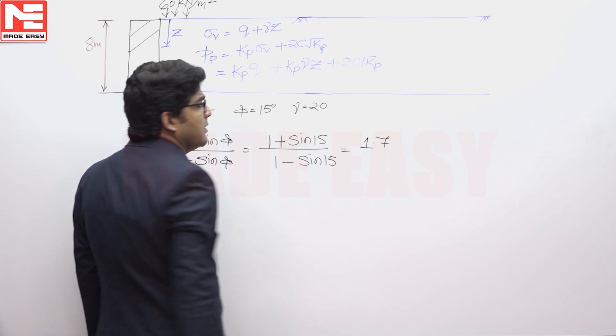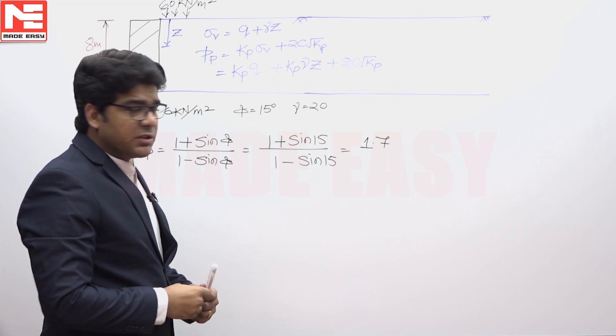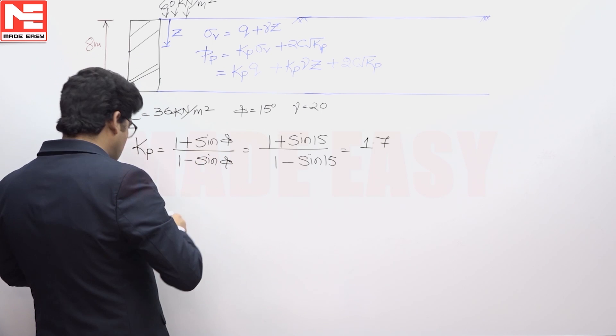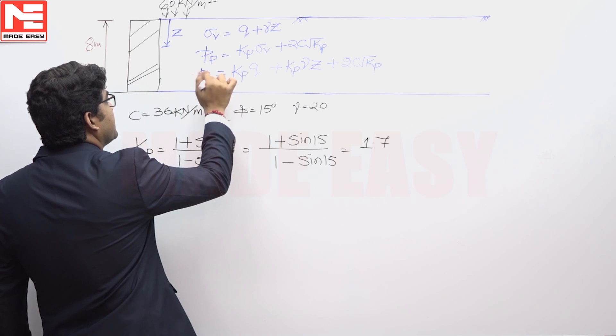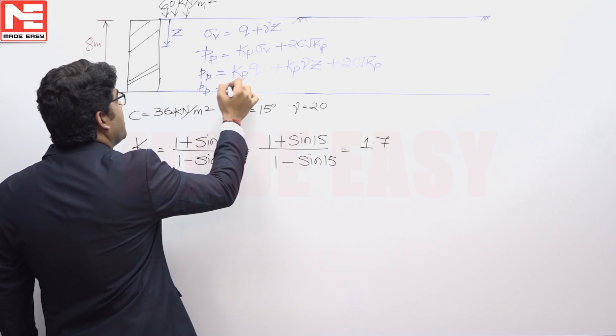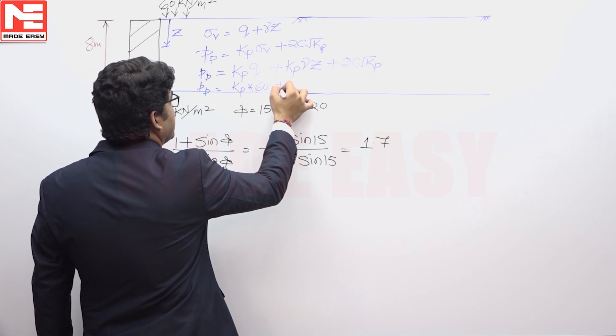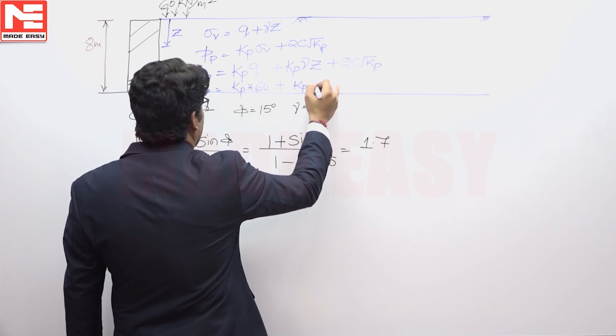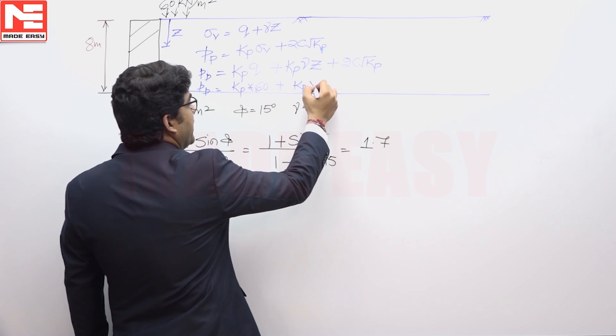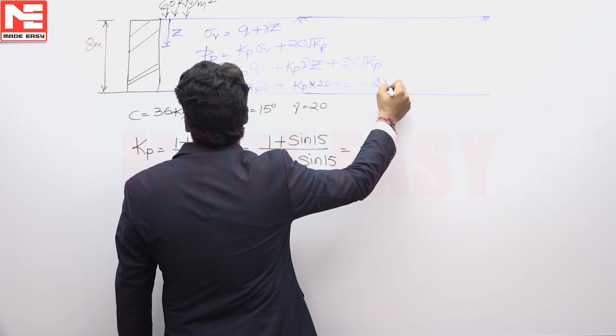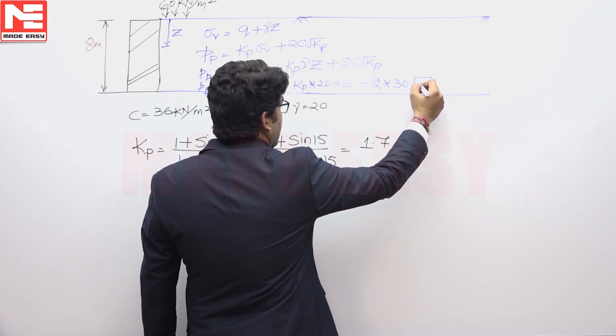Soil is in passive stage and soil is cohesive. So actually there are like three terms, three parameters, in this case that Pp you can say is equivalent to Kp into Q and this Q is equivalent to 60 plus Kp into gamma, that gamma is 20 kilo Newton per meter cube into Z, plus 2 into 36 into root 1.7.